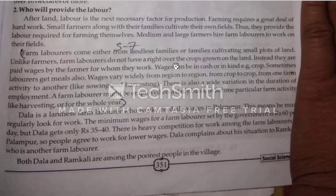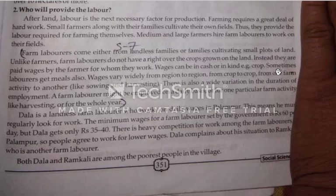Wages can be in cash or in kind, that is in the form of crop. Many times big farmers pay them in cash, and sometimes they give them crop. Sometimes labourers also get meals — meals means food.